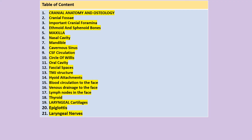We can see the contents covered here: cranial anatomy, osteology, fossa, cranial foraminas, cranial bones, maxilla, mandible, sinuses, CSF circulation, blood-brain barrier, oral cavity, facial spaces, temporomandibular joint, masticatory muscles, TMJ imaging, the hyoid, external carotid, blood circulation to the face, venous drainage, and the laryngeal nerves.